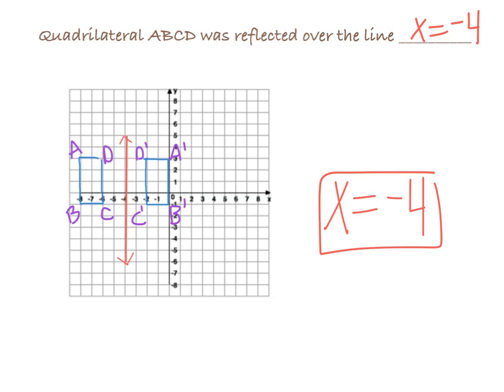And just take a quick peek here at each of these points. Like A, there we go, started out 1, 2, 3, 4 units to the left of that line of reflection. So A prime should be 4 units to the right of it. 1, 2, 3, 4, and there it is. And you can test that for each of the points. Point C was 2 units away to the left. So point C prime should be 2 units to the right of that line of reflection, x equals negative 4.